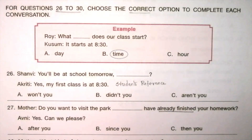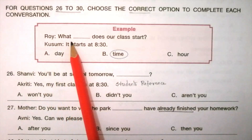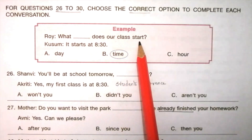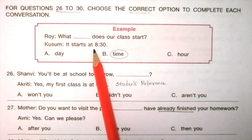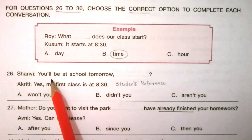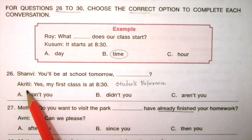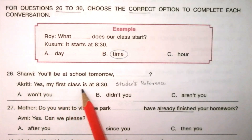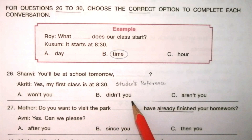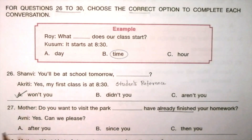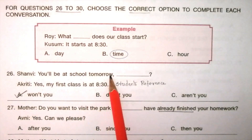For questions 26 to 30, choose the correct option to complete each conversation. Example — Roy: What time does our class start? Kusum: It starts at 8:30. Question 26 — Shanvi: You will be at school tomorrow, ___? Akriti: Yes, my first class is at 8:30. Options: won't you, didn't you, aren't you. The answer is A: won't you. You will be at school tomorrow, won't you?